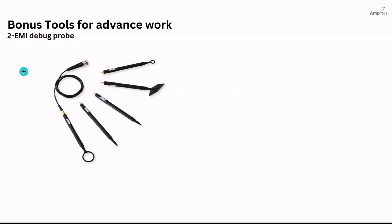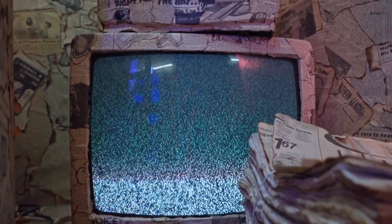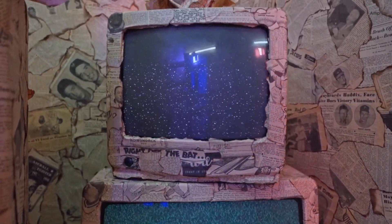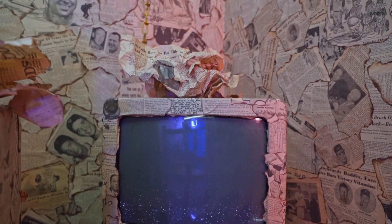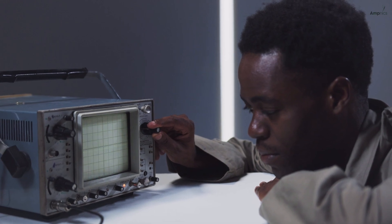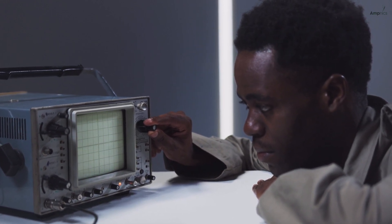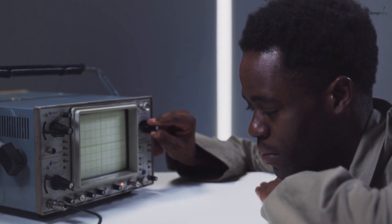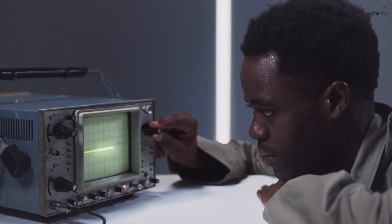Then we have the EMI Debug Probe. An EMI, or Electromagnetic Interference, debug probe is a diagnostic tool used to detect and measure unwanted electromagnetic emissions from a circuit or product. It helps pinpoint sources of EMI in a design, troubleshoot EMI failures, and verify shielding effectiveness and grounding. It is commonly used with a spectrum analyzer to meet EMC compatibility standards during development.